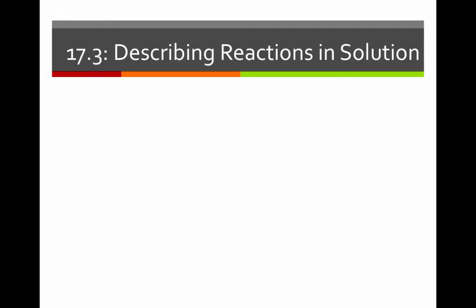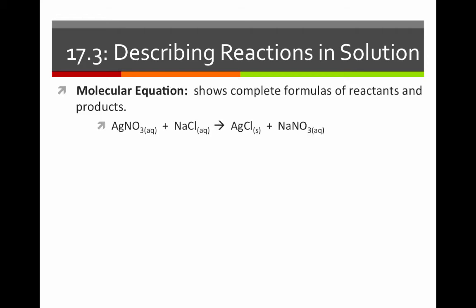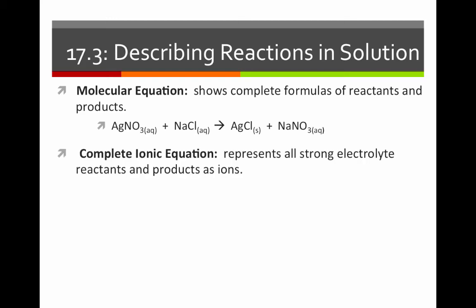There are a few different ways to describe reactions that occur in aqueous solution. The first is with a molecular equation — showing complete formulas for all reactants and products — which is what we've been doing. However, it's often more correct to represent these reactions as complete or net ionic equations. A complete ionic equation represents all strong electrolyte reactants and products as ions; anything that is soluble is written as its dissociated ions.